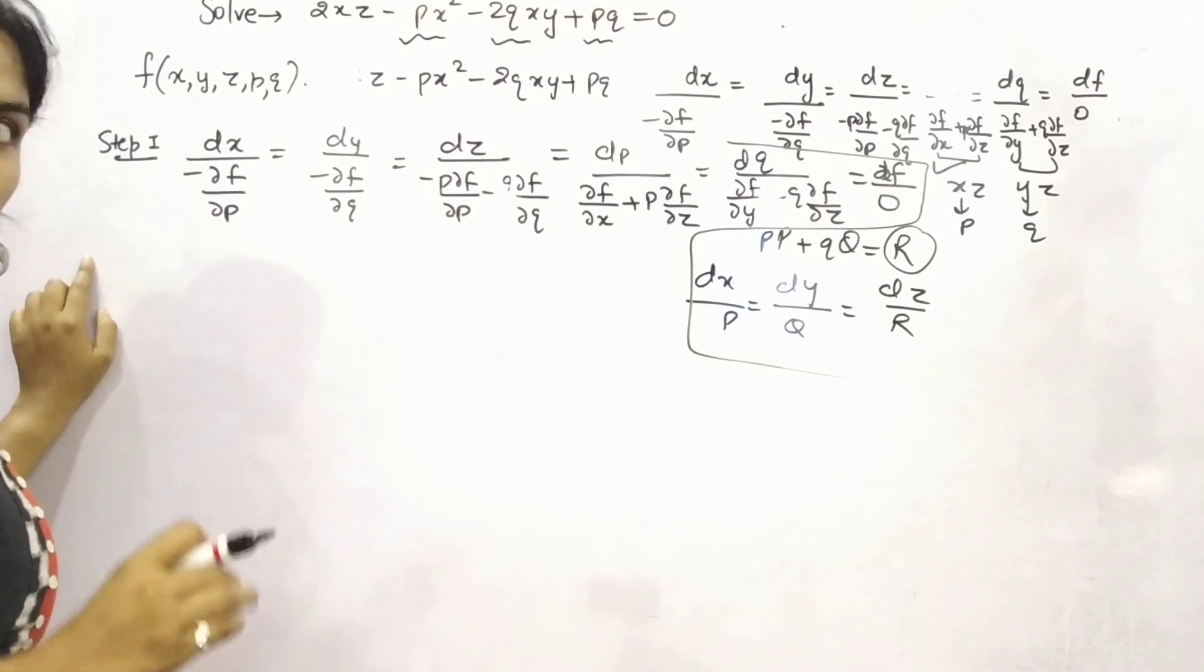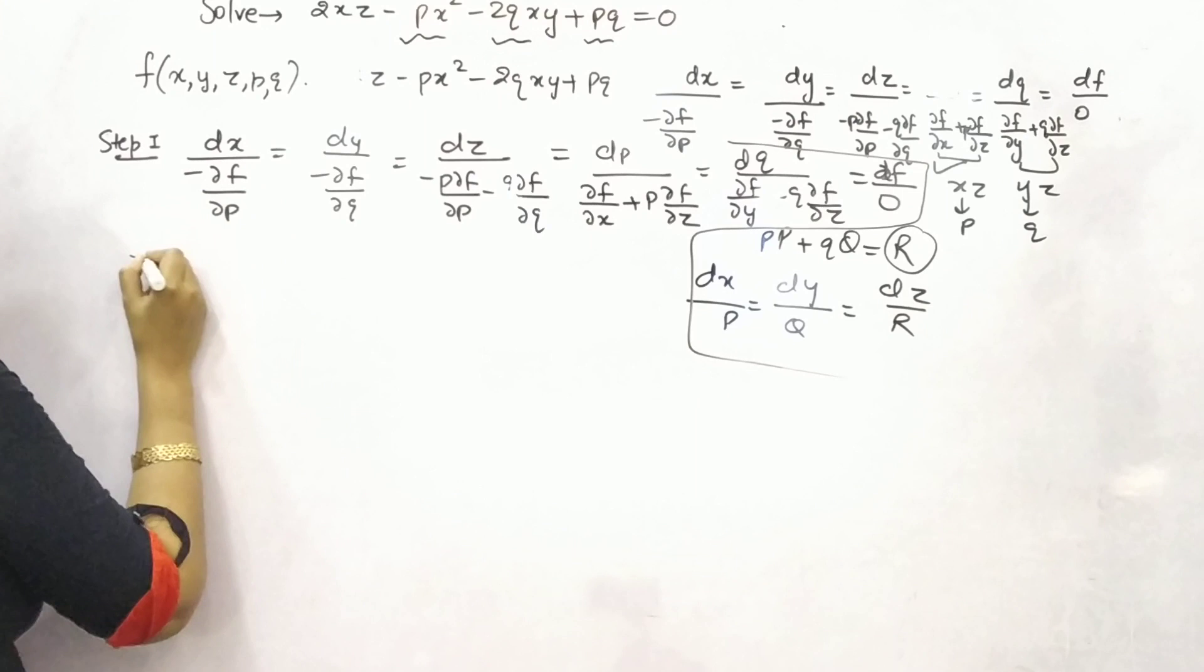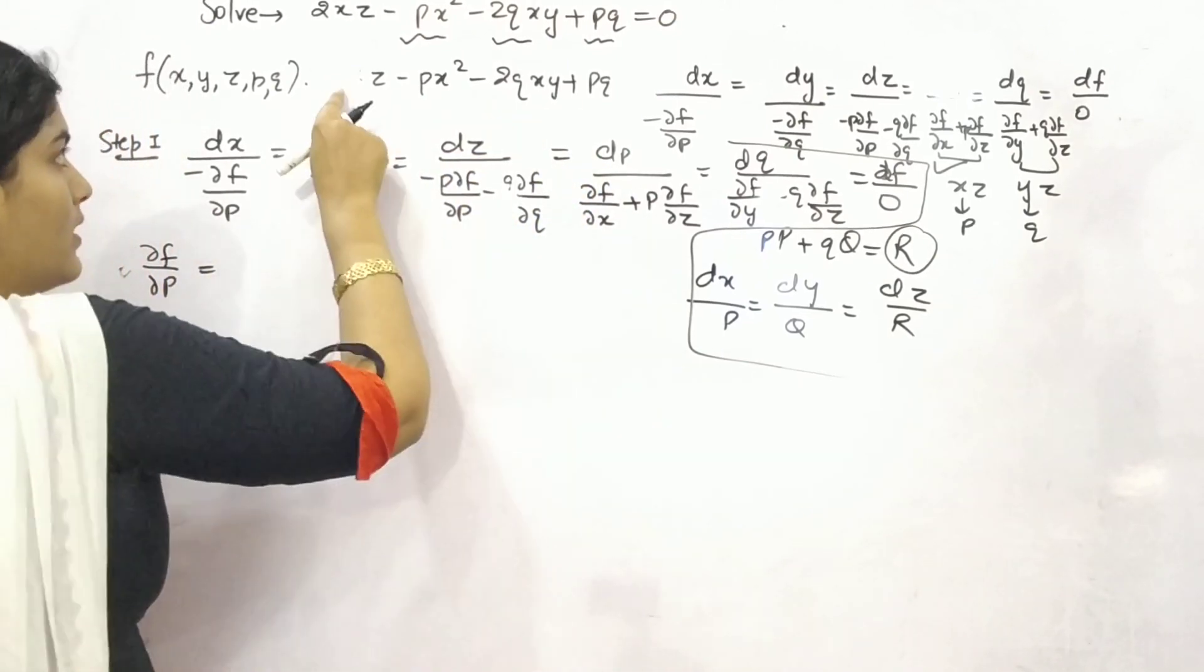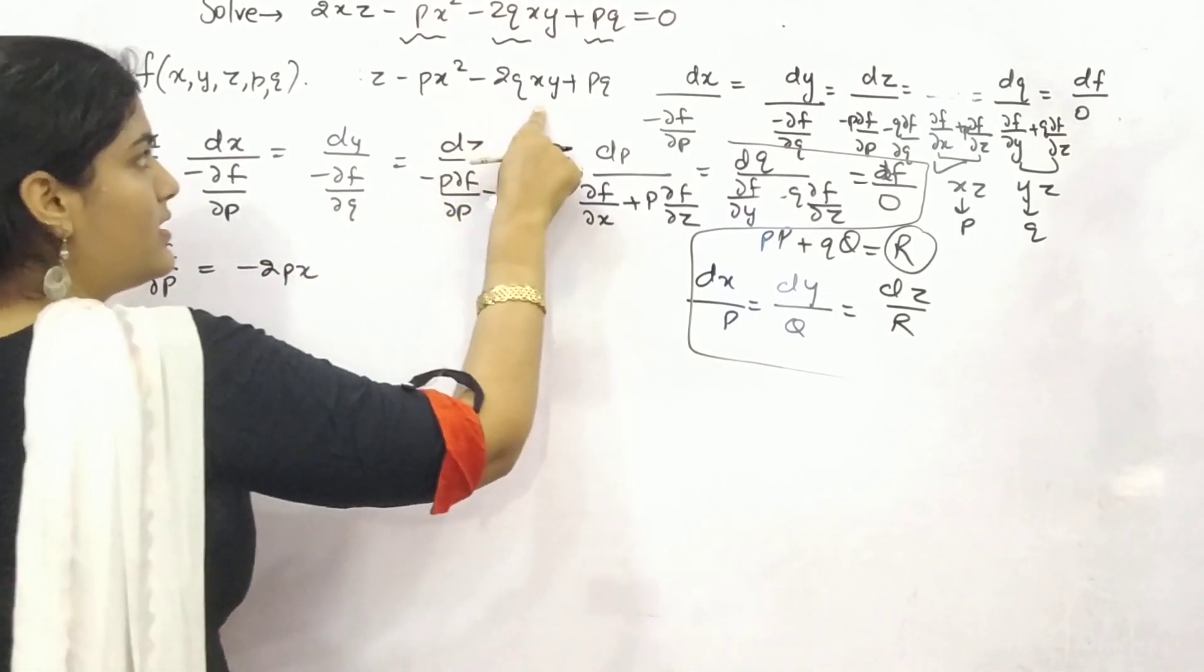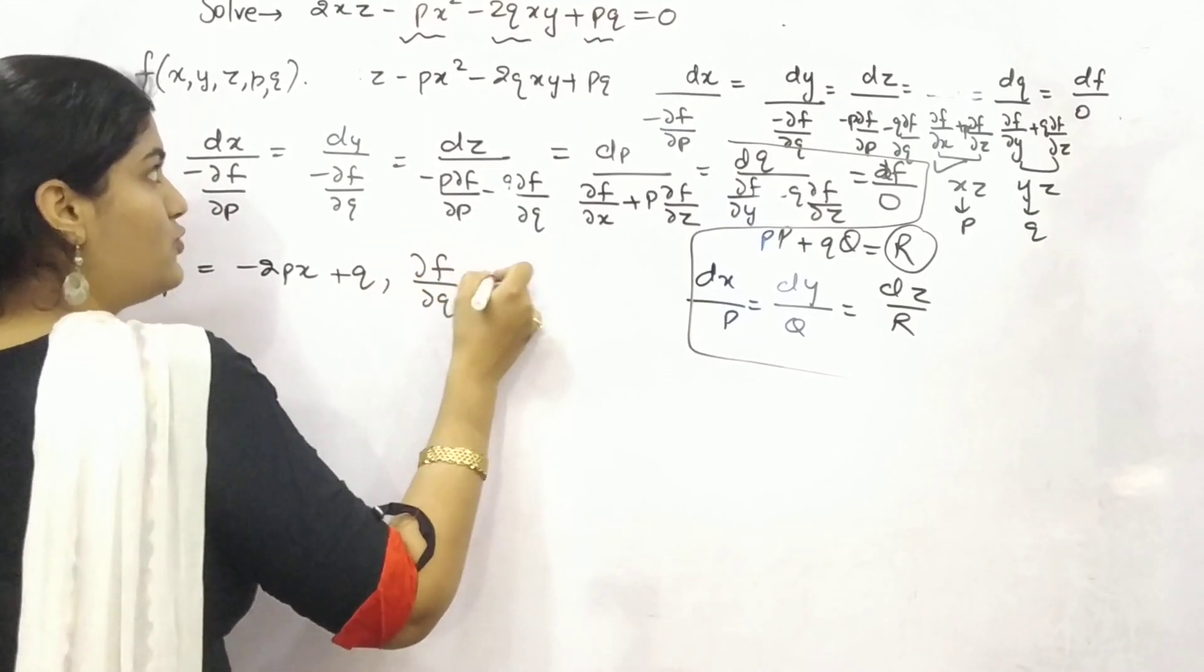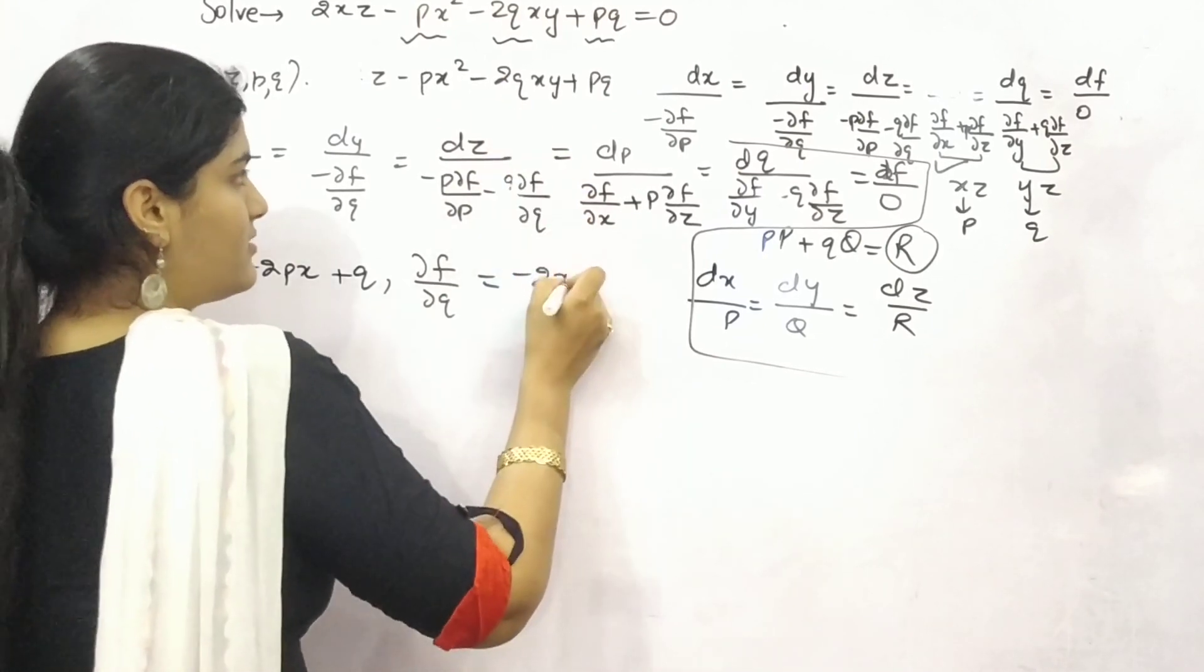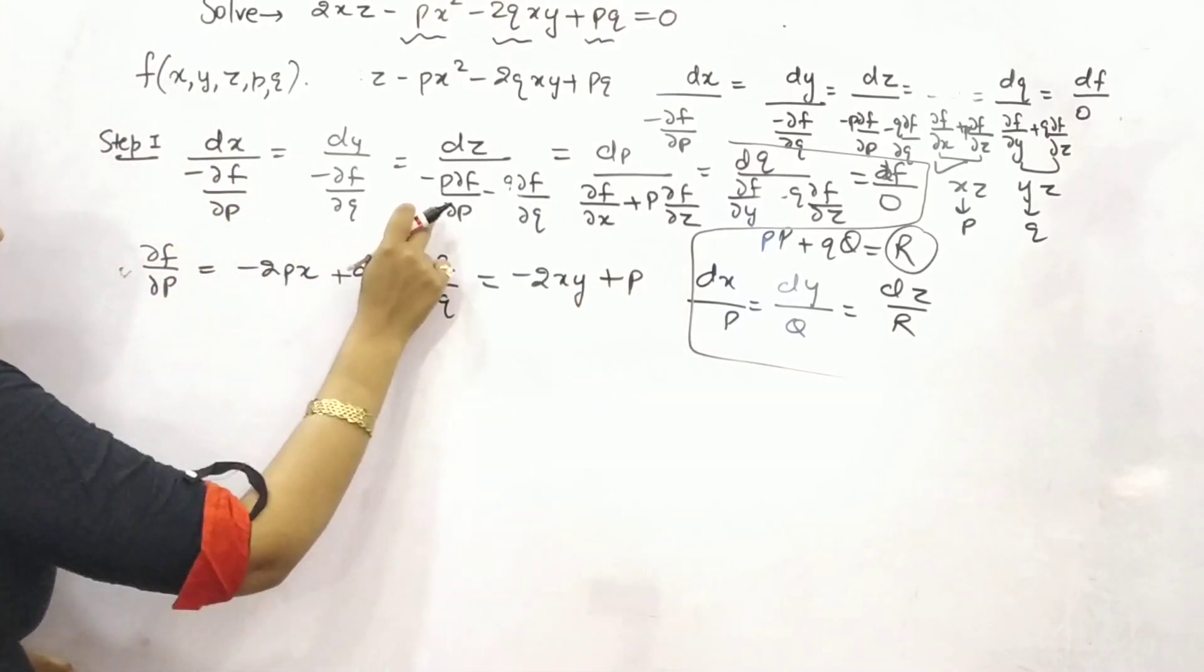Now find out the value one by one and equate them. So find out partial differentiation of f with respect to p. So partially differentiated with respect to p. There is no p, so 0. This will be minus 2px. There is no p. This will be q. Correct? Thereafter with respect to q. There is no q, no q. There will be, it would be 2. For q it's 1. And this would be p.